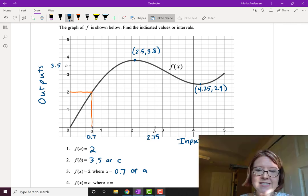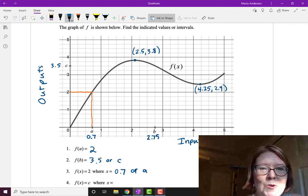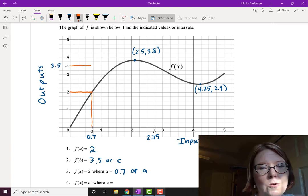Next one, f of x equals c where x equals what? So again, let's start at the output value of c. That was at 3.5. And we'll take that over to the graph. And notice that it actually hits the graph twice.